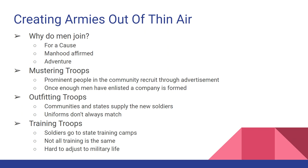Mustering troops involved prominent citizens setting up recruiting offices, using newspapers, word of mouth, churches, and social gatherings. Some states offered money to enlist. Once enough men joined, a company from that town was formed and officers were elected — generally those same prominent citizens who recruited you. Once the company was mustered into service, it might be called the 1st Carrollton Regiment or 2nd LaGrange Regiment, with all people from that community serving together.